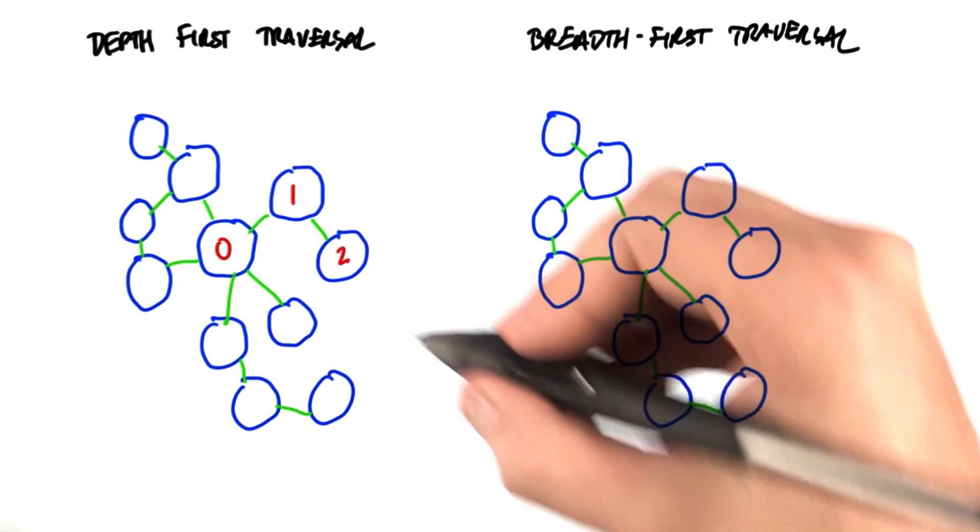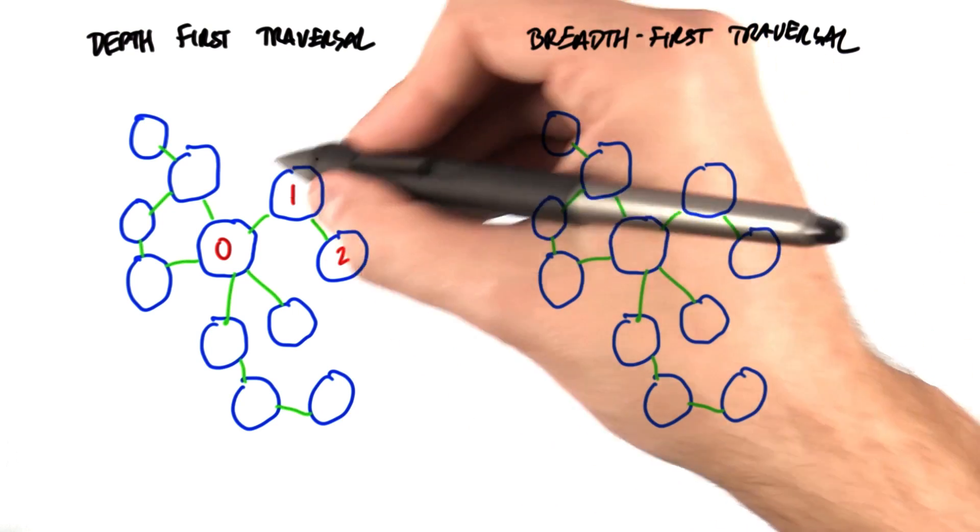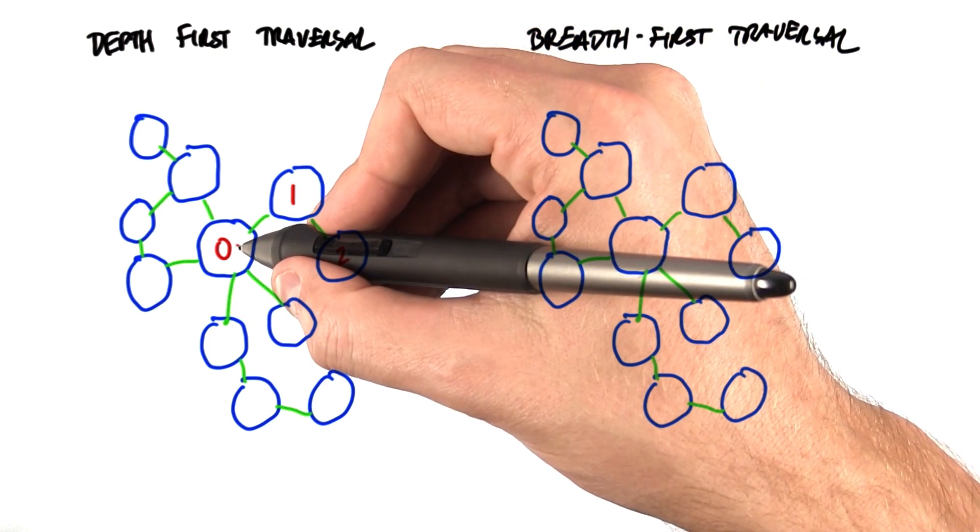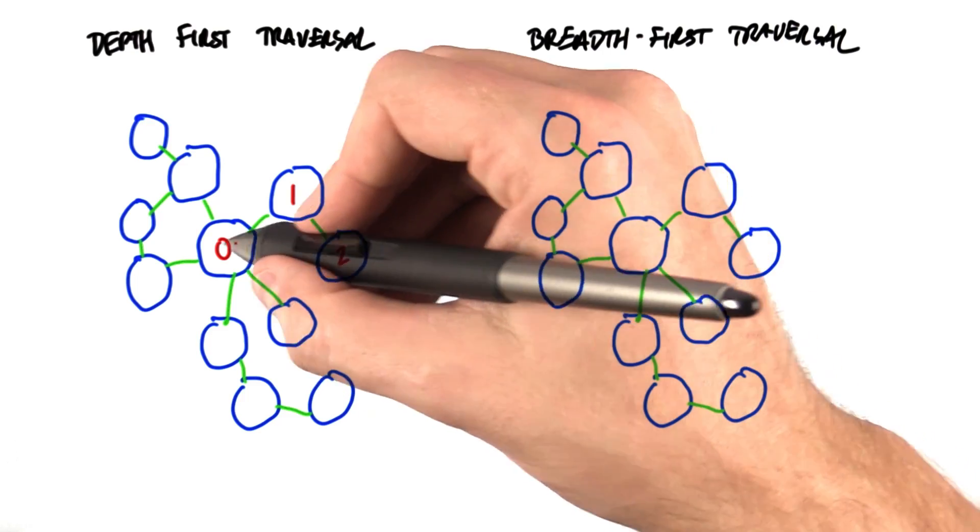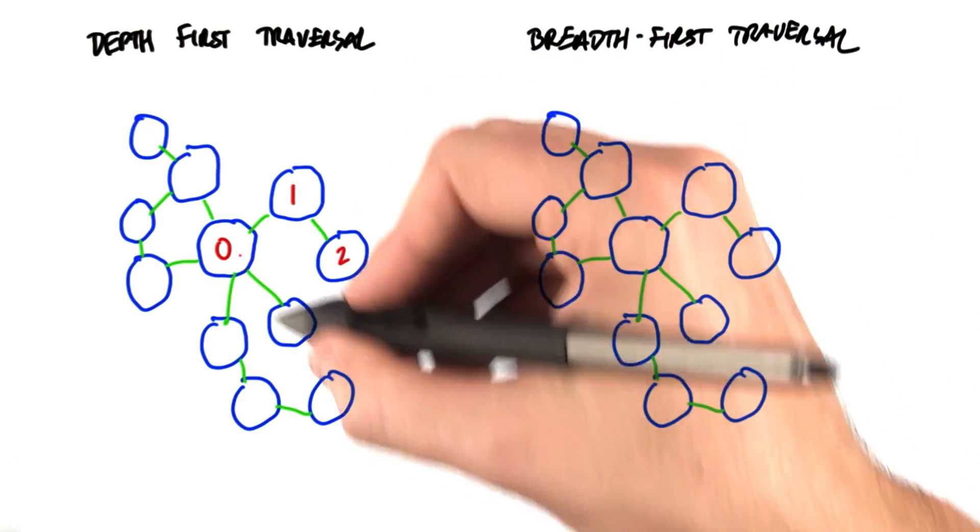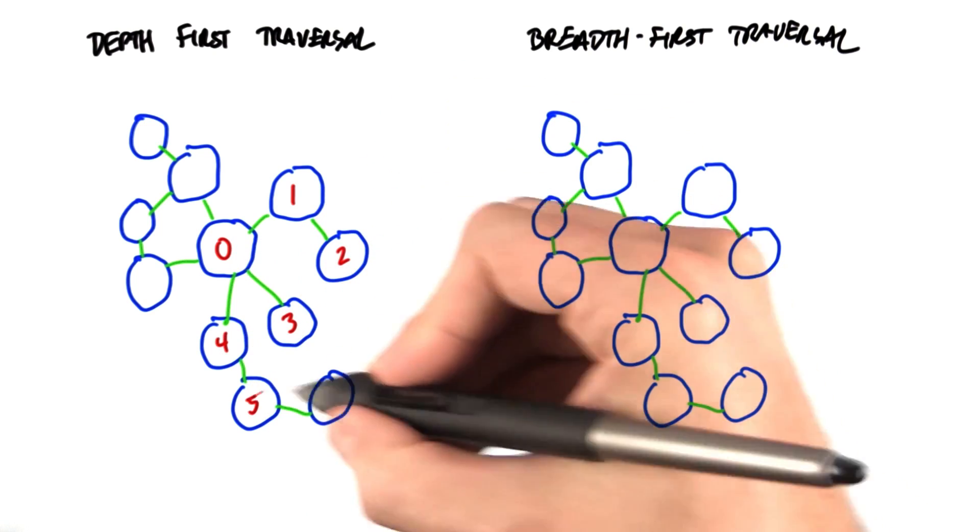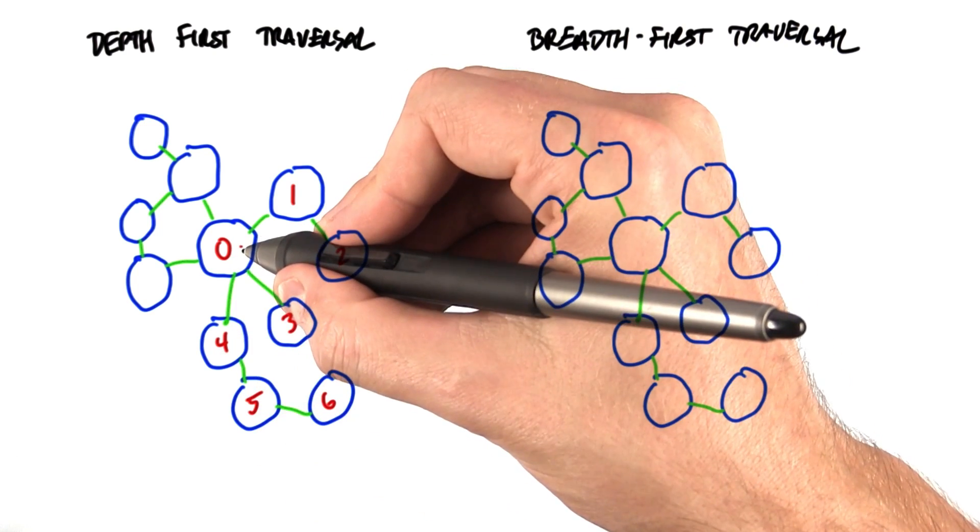If we run out of unvisited neighbors, such as here, we pop back to a previously visited node and continue. Well, we don't have any neighbors here either, so we might pop back here. And now we're going to continue with our other unvisited neighbors. So we might come here next, we don't have any more, we pop back up. We might come here next, 4, 5, 6, pop all the way back up here.